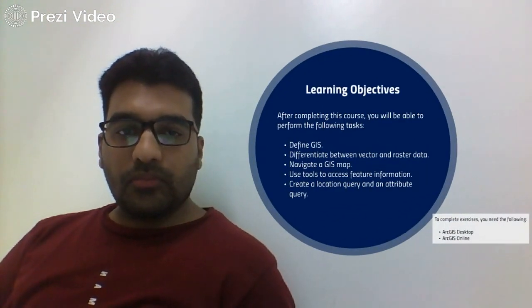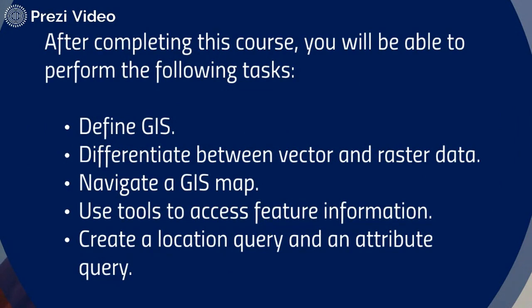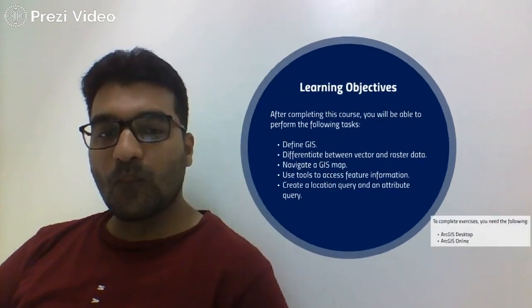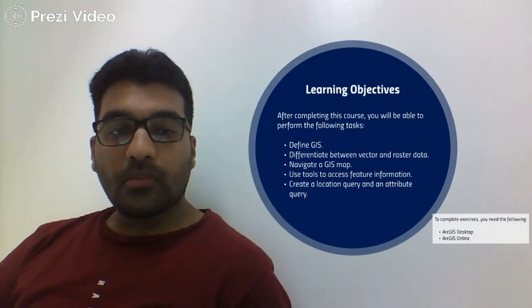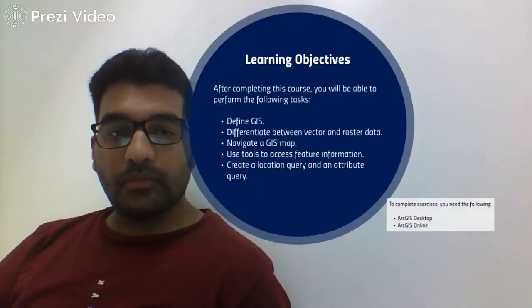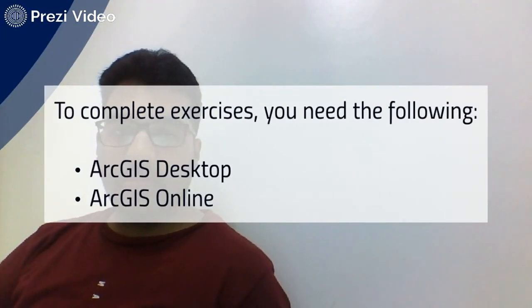The objectives of this lecture: after this session you will be able to define GIS, differentiate between vector and raster data, how to navigate a GIS map and different tools used to access feature information, and what is the difference between a location query and an attribute query. Software you can use includes ArcGIS Desktop or ArcGIS Online.